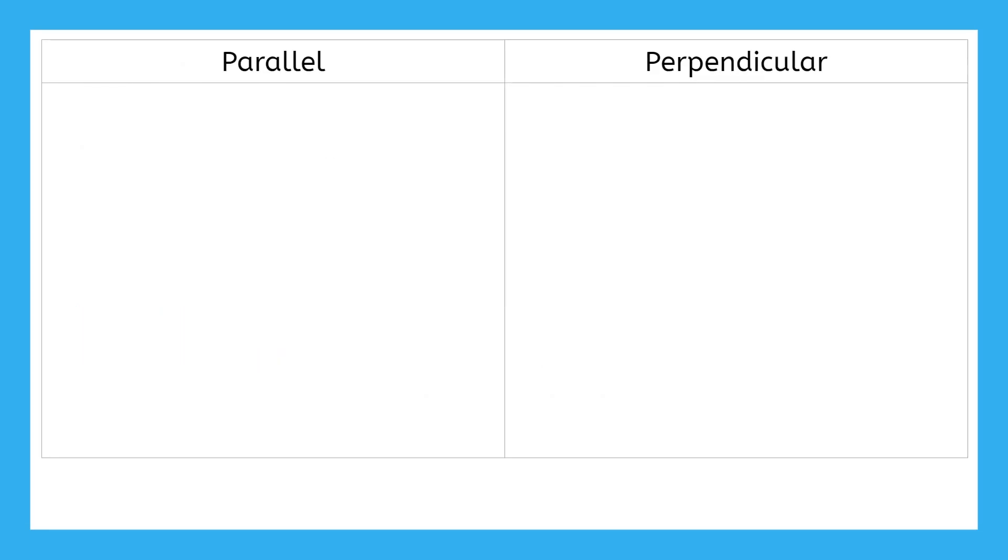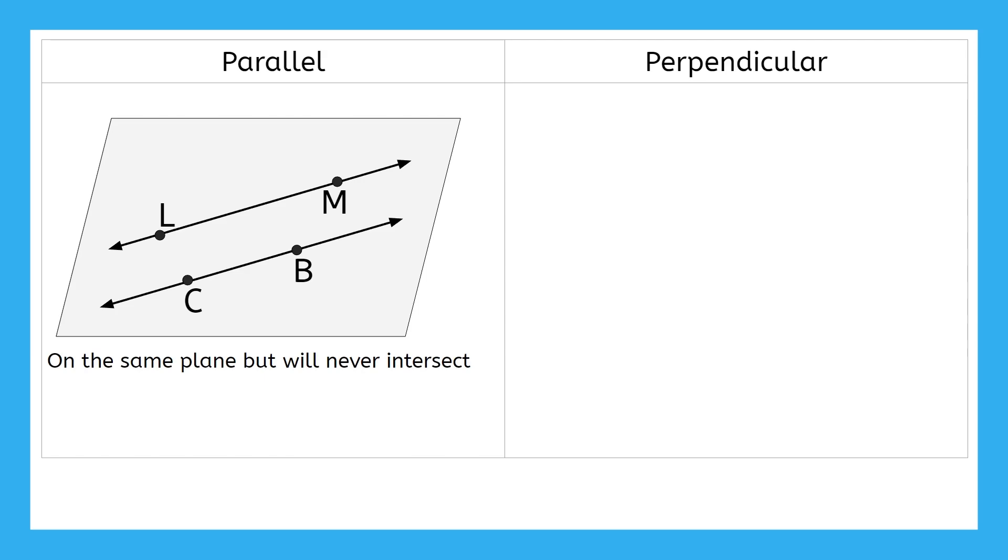So, what do parallel and perpendicular mean? You're probably familiar with these terms from your previous math courses, but let's refresh our memory. Two lines that are parallel must be on the same plane, but never intersect. In this example, lines LM and CB are parallel. This symbol means parallel. And on the sketch itself, we can tell people that the lines are parallel by using this little arrow symbol.